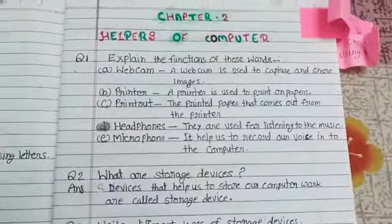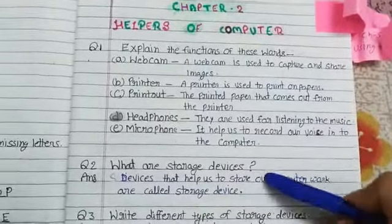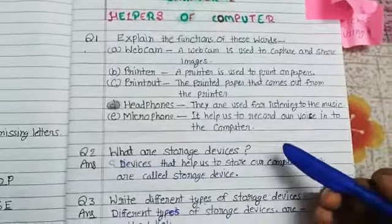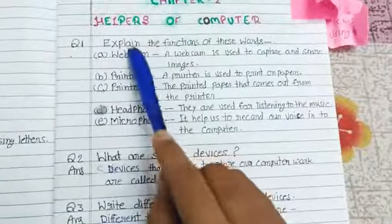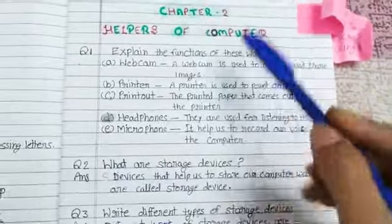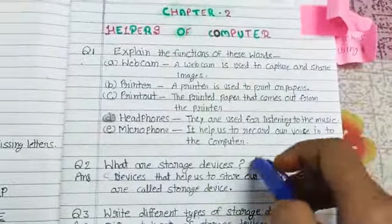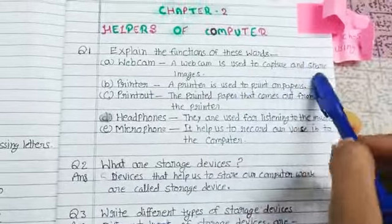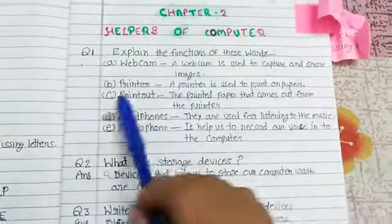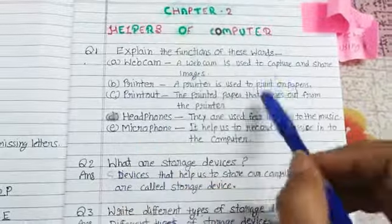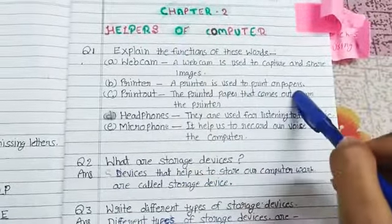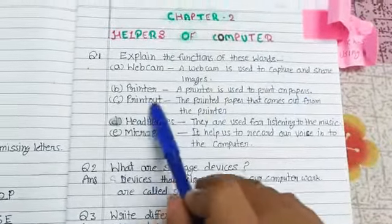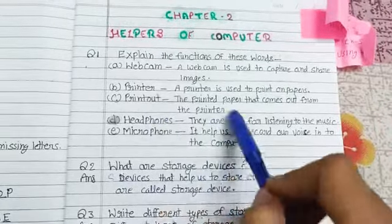All these questions you have to complete and learn. First is explain the function of these words. Webcam is used to capture and share images. Printer is used to print on papers. Printout is the printed paper that comes out from the printer.